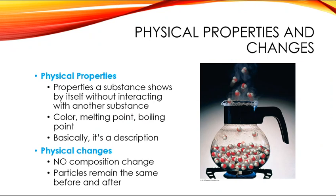The next topic is physical properties and changes. A physical property is something a compound shows without interacting with anything else. For example, if you see a red car, it's red without anything having to happen. Color, melting point, boiling point, freezing point, and density are all physical properties — nothing has to happen to the substance for that property to be shown.